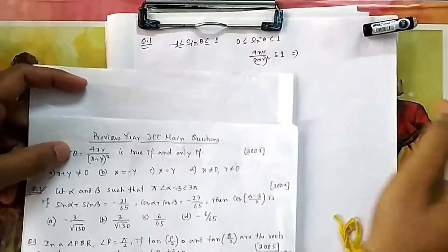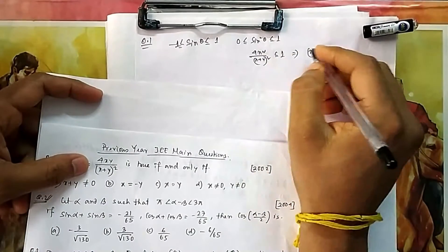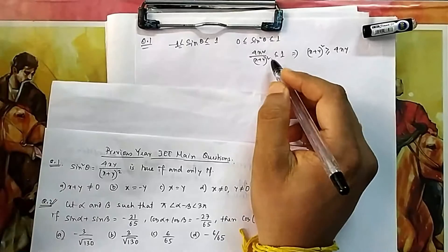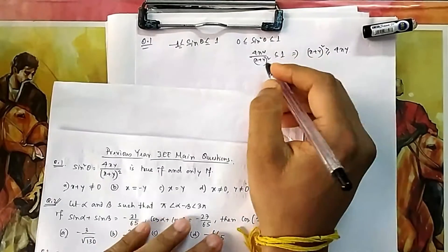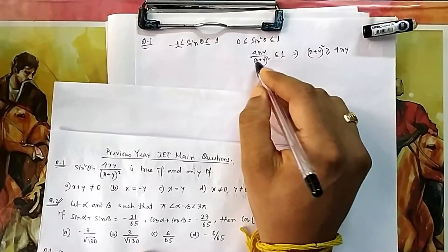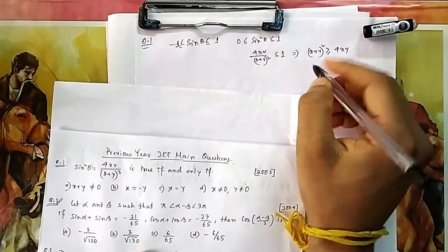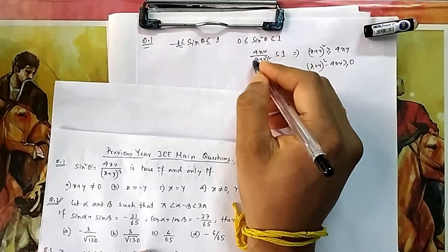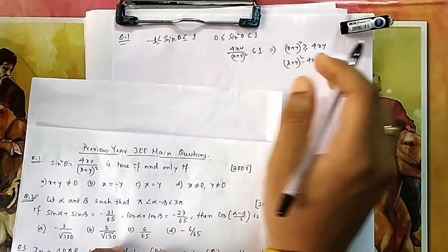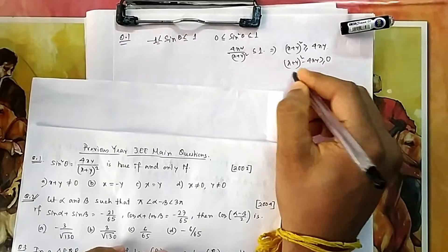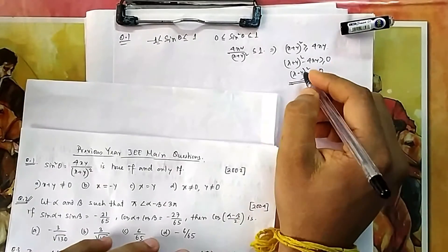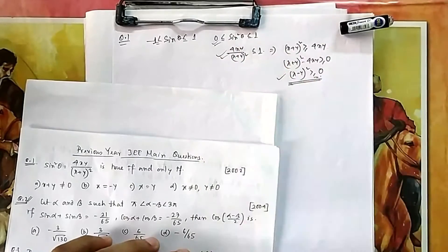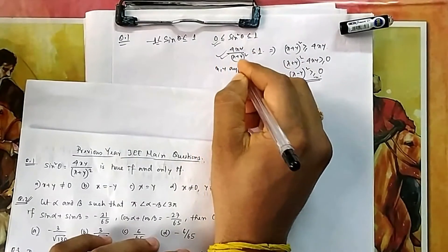So if 4xy/(x+y)² ≤ 1, then (x+y)² ≥ 4xy. Since (x+y)² is always positive, we can cross-multiply the inequality. This gives (x+y)² ≥ 4xy, which means (x-y)² ≥ 0. This is always true because any square is always greater than or equal to zero.